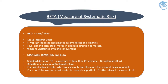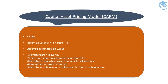Next comes CAPM — the Capital Asset Pricing Model — one of the most frequently asked and favorite topics for examiners. It's a very simple formula and concept, yet it appears in almost every CA Final examination attempt. CAPM simply states: return on a security equals risk-free return plus beta multiplied by the market risk premium. Let's get into the detail to understand this concept clearly.